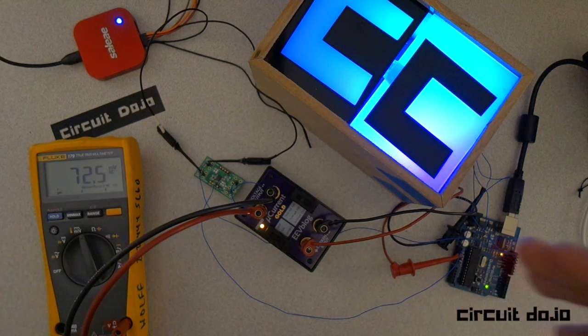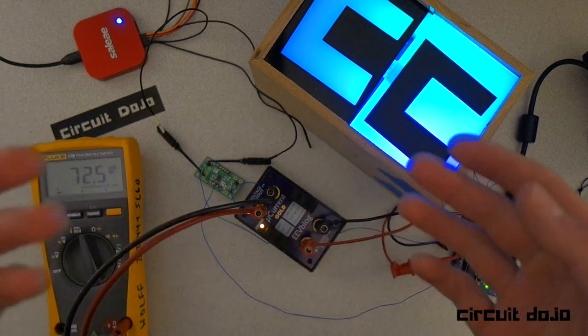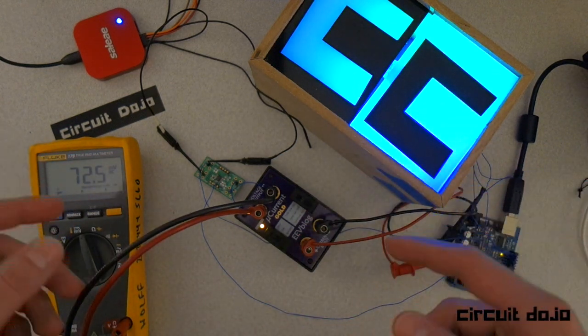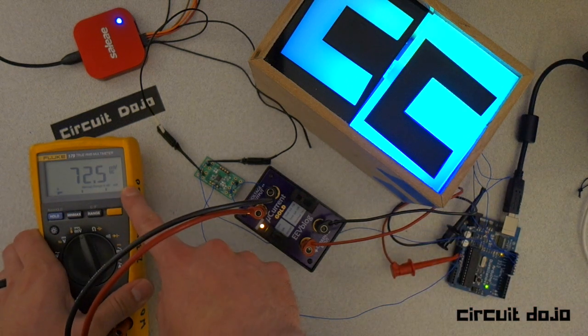In milliamp mode, every millivolt on my multimeter is equal to 1 milliamp. Thus, the 72.5 millivolts here directly translates to milliamps.